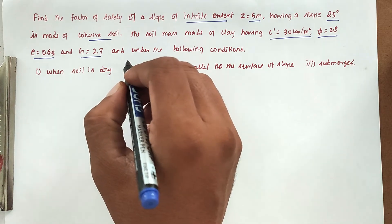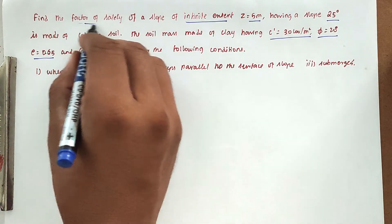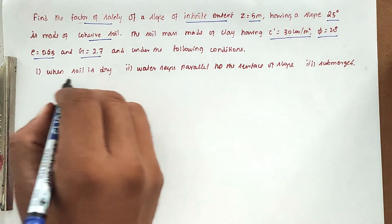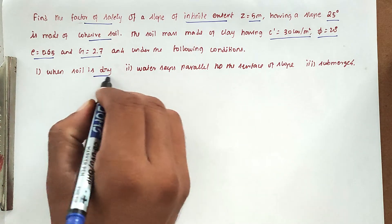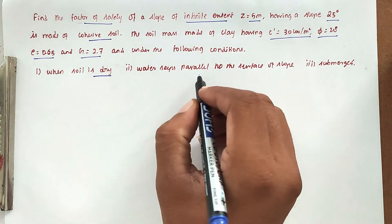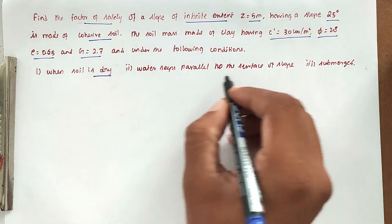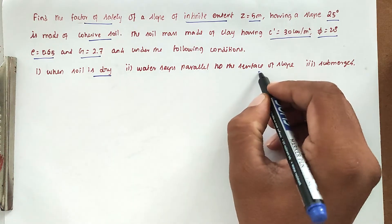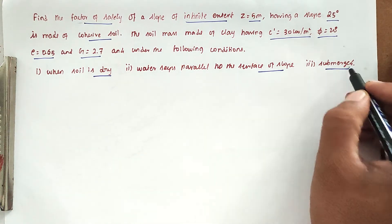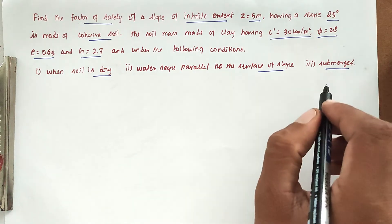We have to find the factor of safety under three conditions: first, soil is dry; second, seepage pressure parallel to the surface of the slope; third, the soil is submerged.